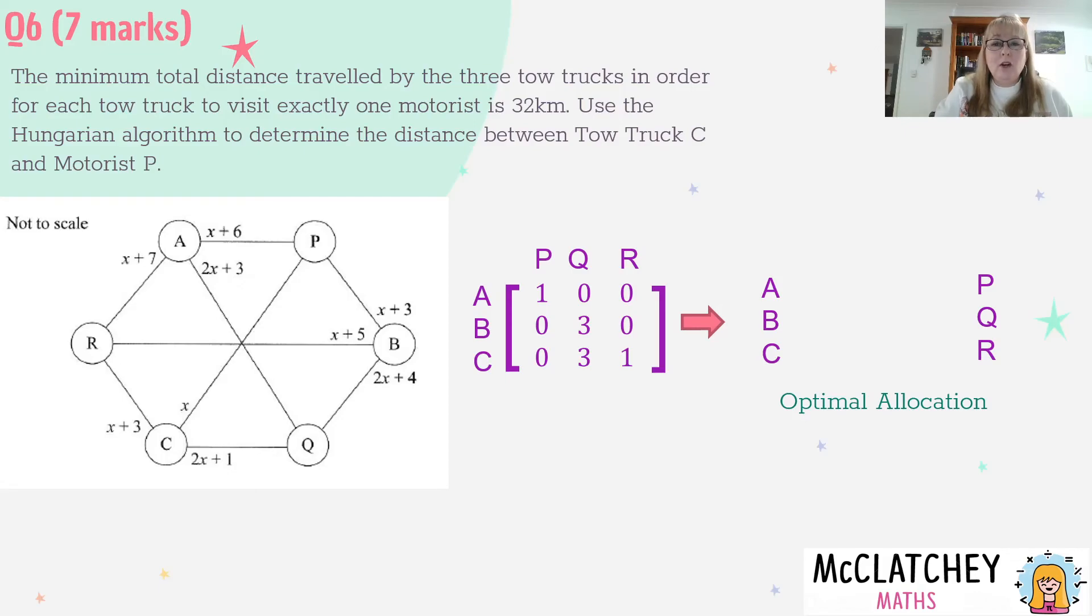If we look now, A's got two options Q and R, B's got two options P and Q, but C only has one option that's going to P. So C can only go to motorist P. That eliminates C. We see that B is also going to P - they can't do that because C's going there, which means B can only go to R, which leaves A with one option that's Q. Now remember the optimal allocation is 32 kilometres. So now if we add those three distances together, the answer is going to be equal to 32.